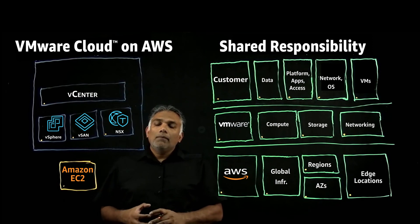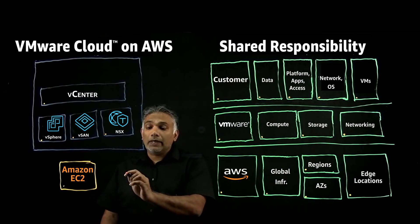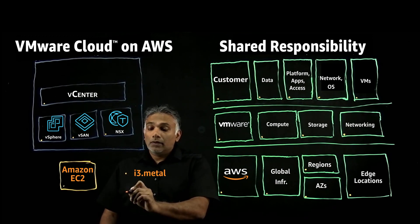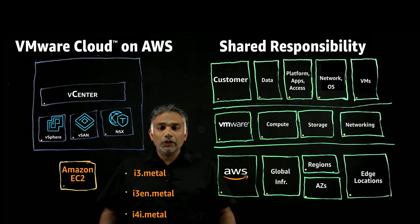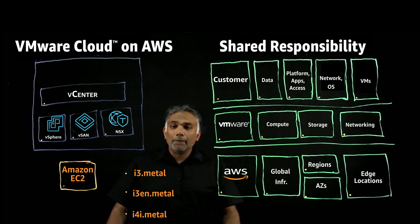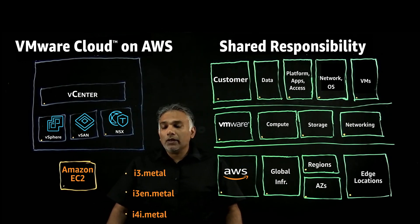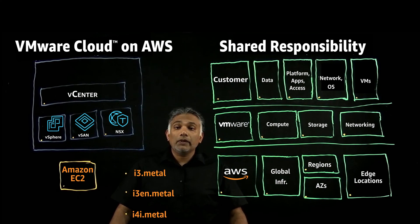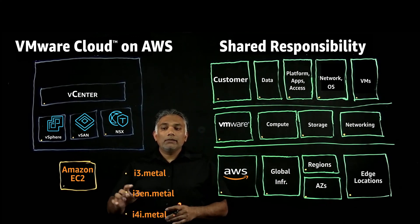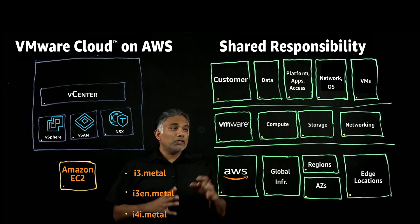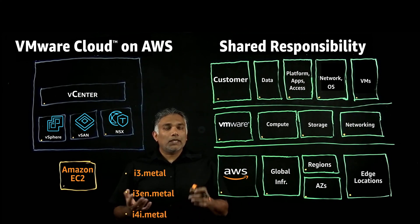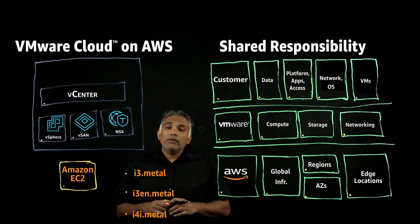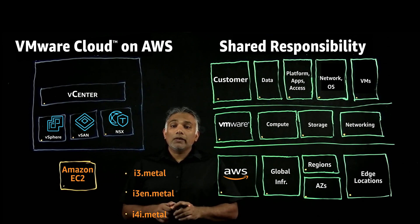You might ask what the bare-metal types are. There are three main types: I3, I3EN, and I4. There are additional ones on the roadmap, and we encourage you to look on our website to see the versions coming out. The website also includes specs on each of these bare-metal servers. We also encourage you to reach out to our AWS VMware Cloud on AWS team, so they can help you choose the right bare-metal server, regions to deploy to, sizing and optimizing, how to do the migration, and modernization opportunities.